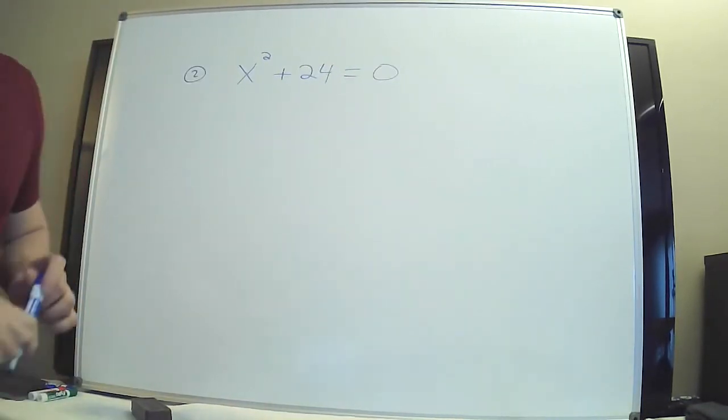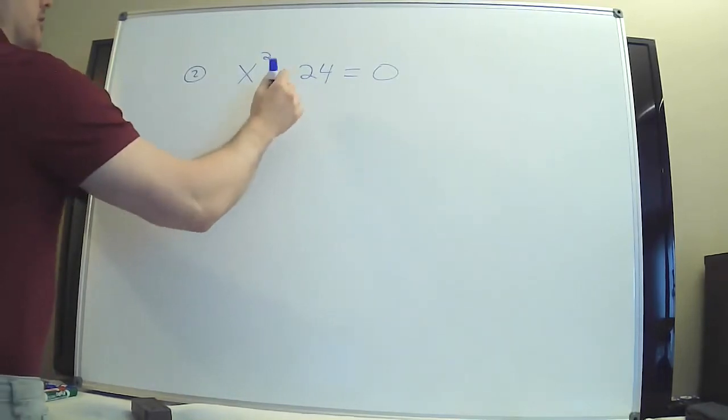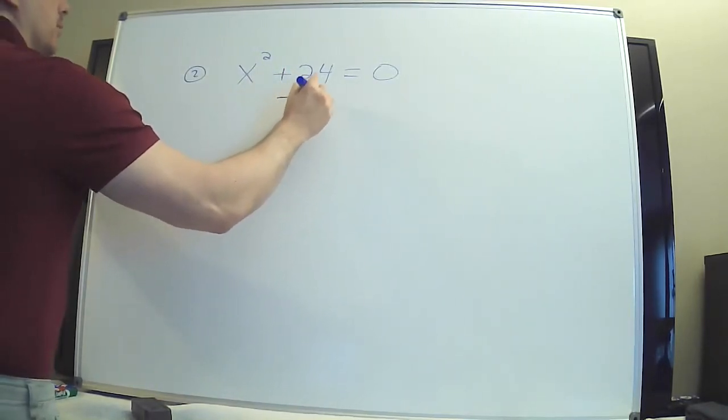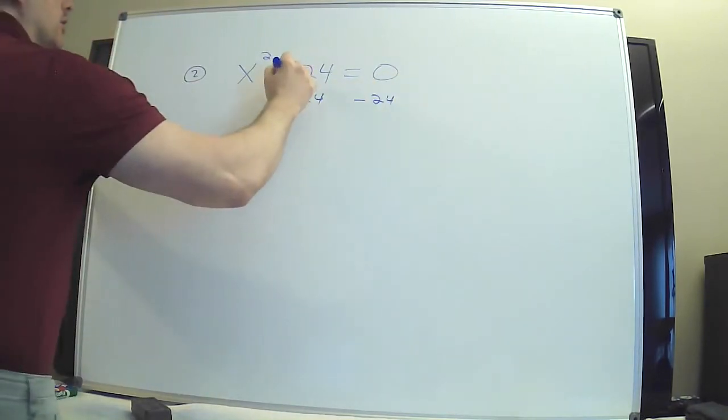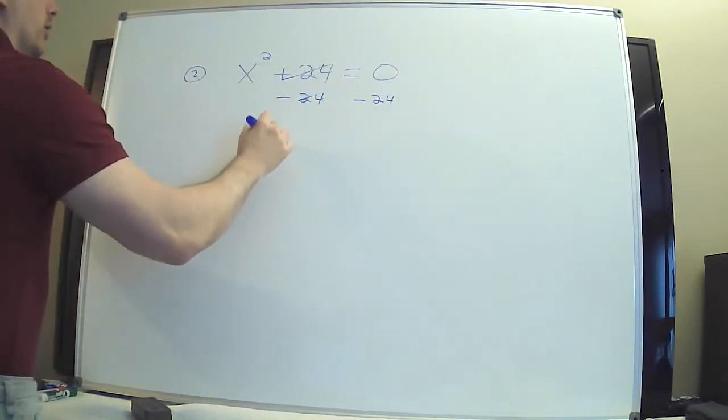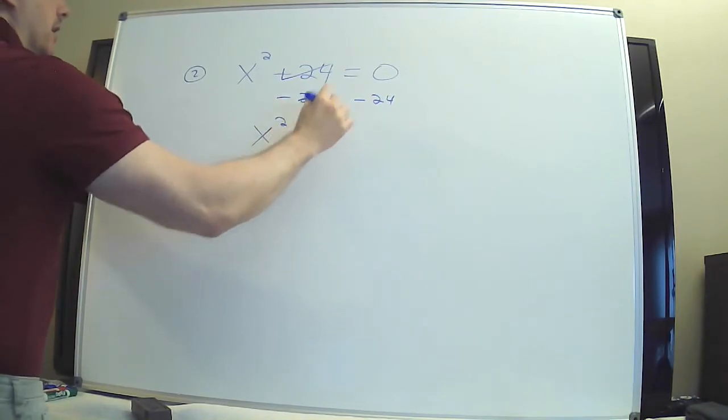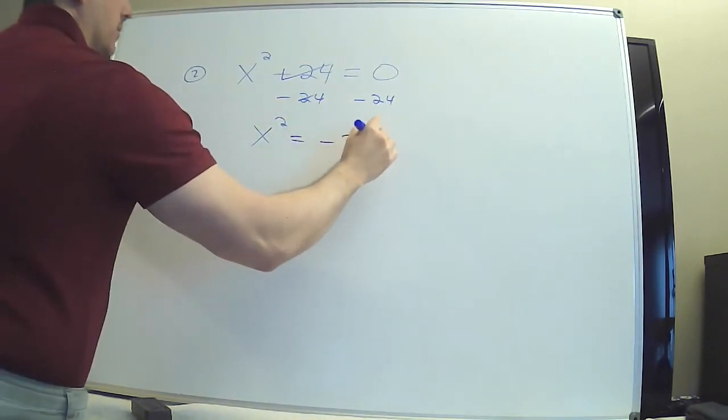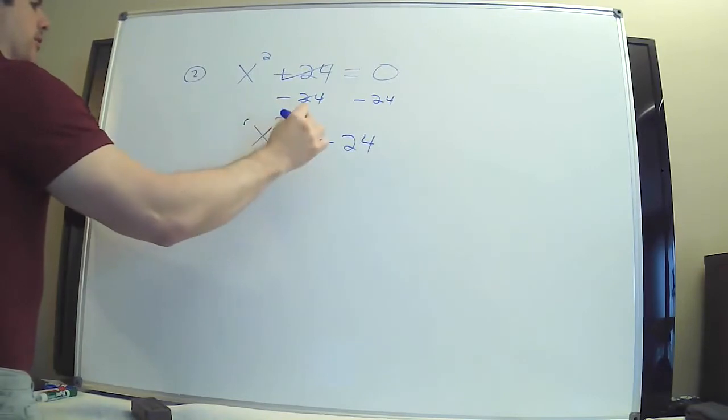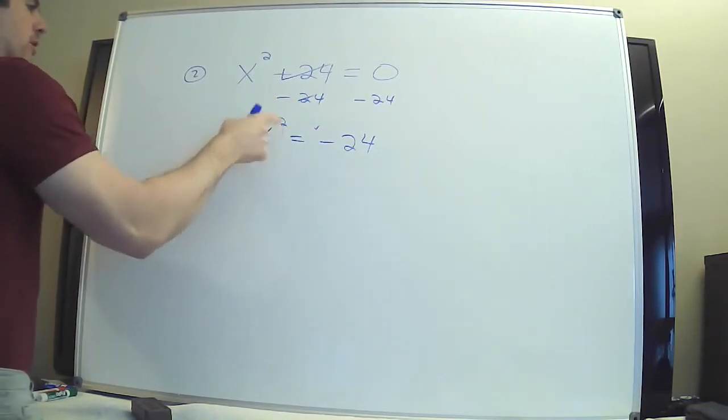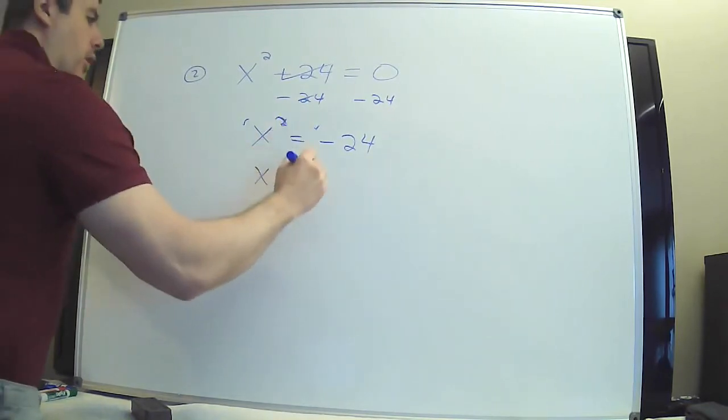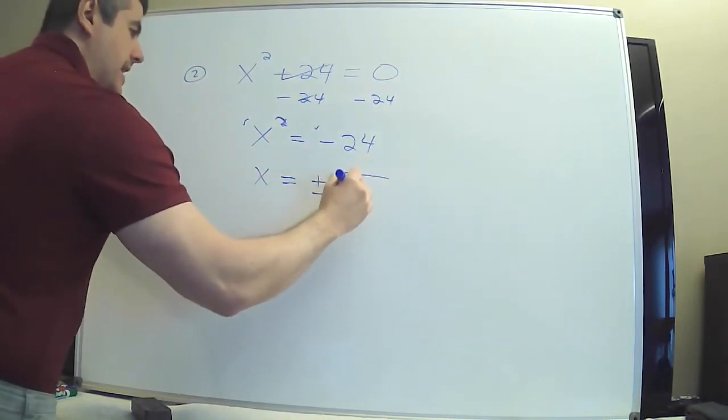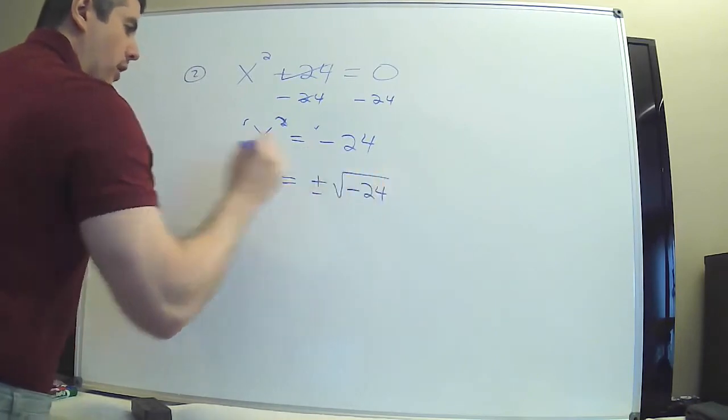Okay, problem two. You have a plus, so you have to do the opposite of that, which is subtract. But whatever you do to the left, you have to do to the right. So a positive 24 and a minus 24 are going to cancel out, and you get negative 24. Uh-oh. Now I'm going to take the root of both sides, square root and square eat each other up, and you're left with x. Over here, you get plus and minus radical negative 24.